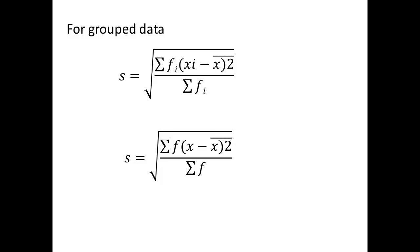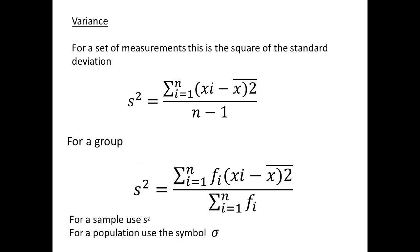For data that are being grouped by frequency, we can write S as being equal to root Σfi(Xi - X̄)² divided by Σfi. Or more simply, S equals the root of Σf(X - X̄)² divided by Σf. The variance is given by the square of the standard deviation, so S² equals Σ(Xi - X̄)² divided by N minus 1.